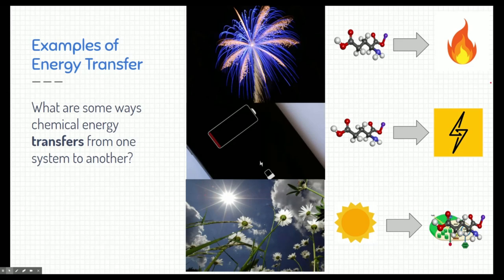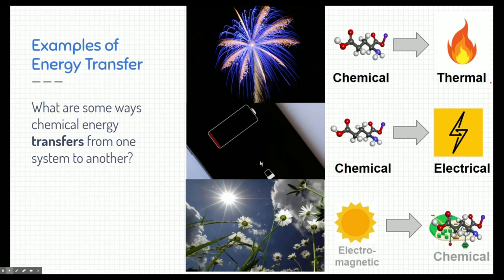Another example is the battery in your phone. A lithium-ion battery has chemicals causing reactions, and those reactions transfer chemical energy into electrical energy your phone can use. A third example is photosynthesis, where plants take sunlight energy — electromagnetic energy — along with carbon dioxide and water, and transfer it into chemical energy stored in the bonds of the plant itself, typically as glucose or sugars. Some of those we can even eat, like vegetables and fruits.